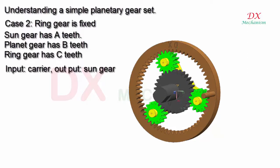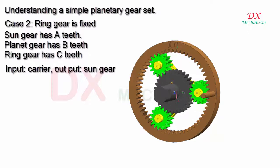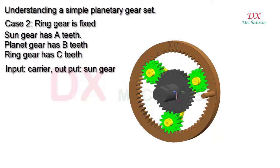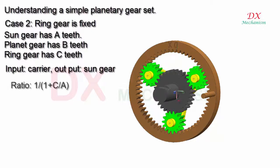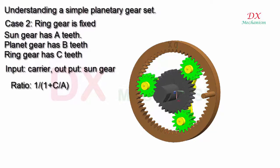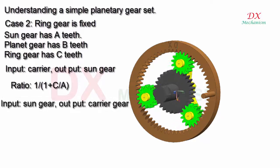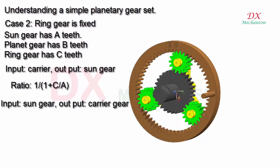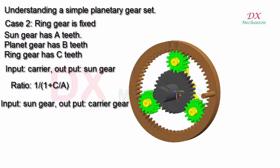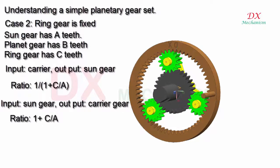Input: carrier. Output: sun gear. Input: sun gear. Output: carrier. Formula of ratio is provided for these configurations.